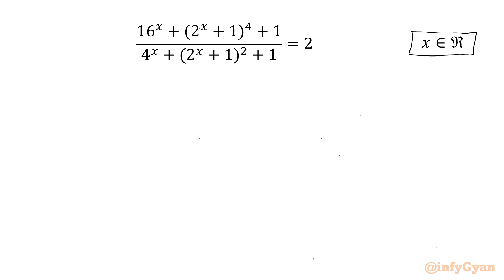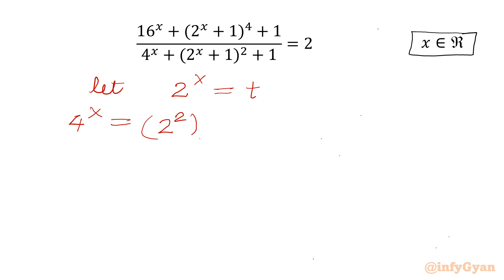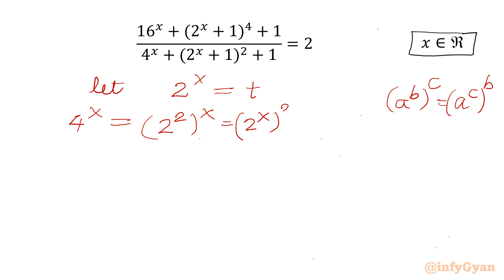Let's get started by considering our substitution. Let 2^x equal to t. So I can write the value of 4^x — it will become (2^2)^x. Using the exponent property a^b whole power c, we can write a^c whole power b. So 2^x whole squared becomes t squared.